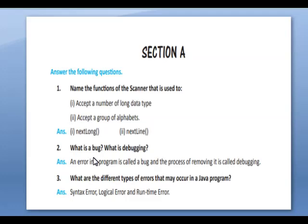What is a bug? What is debugging? Bug means error. Debugging means to remove the errors. An error in a program is called a bug, and the process of removing it is called debugging.